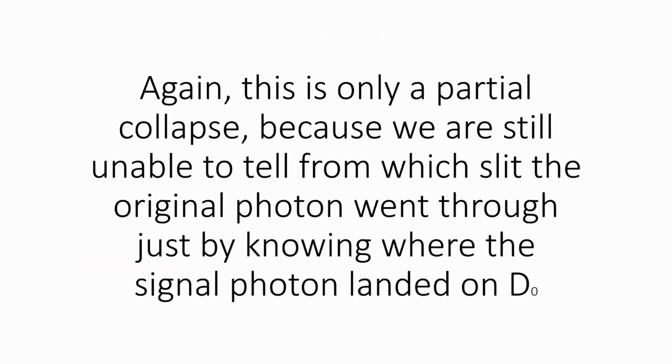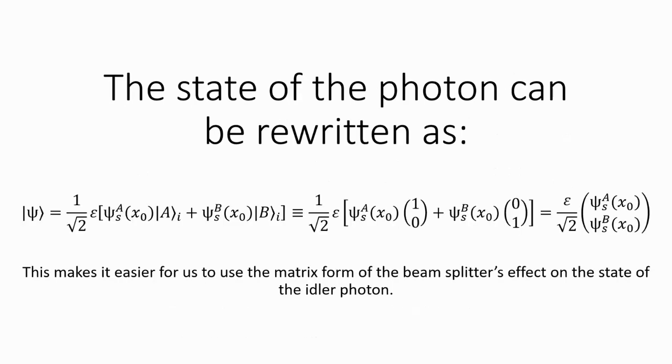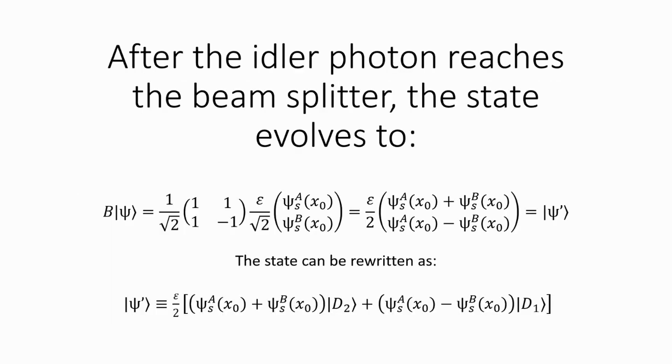The effect or the operation of the 50-to-50 beam splitter to the idler photon state can be represented as a matrix. The derivation can be found in MIT OCW video. The state of the photon can be rewritten as... This makes it easier for us to use the matrix form of the beam splitter's operation on the state of the idler photon. After the idler photon reaches the beam splitter, the state evolves to... which can be rewritten as...